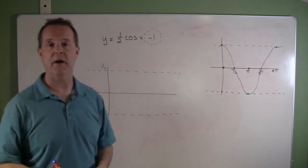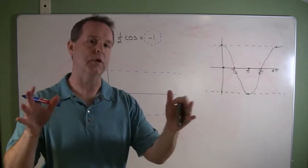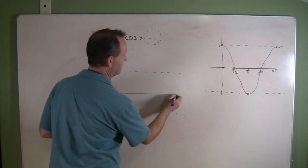Our period right there, it's a one, so we know that we have a normal 2 pi period. So we'll put down zero, and we'll put down 2 pi.